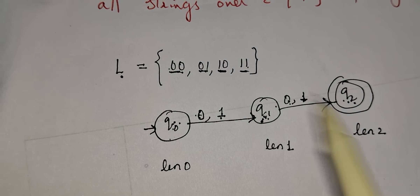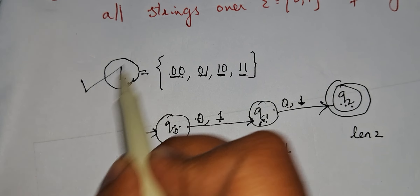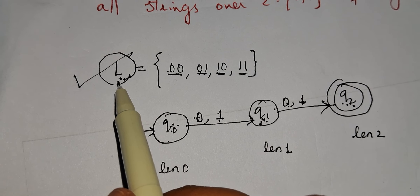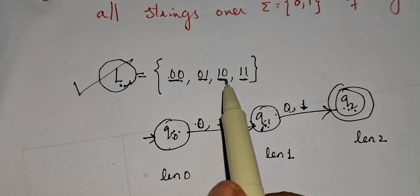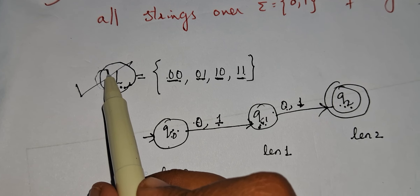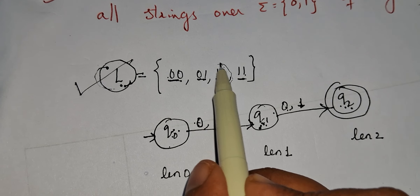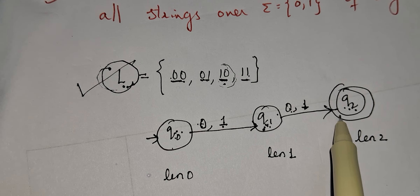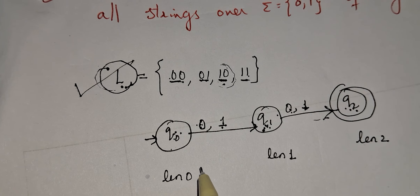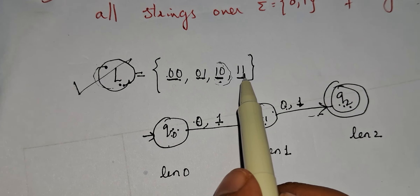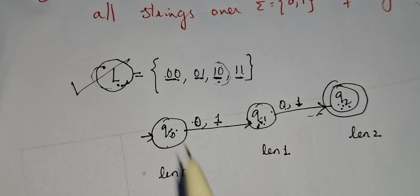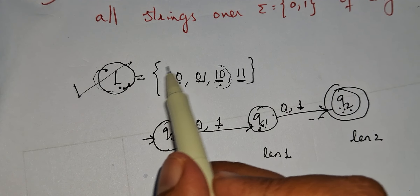All strings in this language are accepted by the automata, so we can say this language is accepted. A language is accepted when all strings in it are accepted by the machine. If even one string — say 10 — is not accepted, we cannot say L is accepted by the automata.